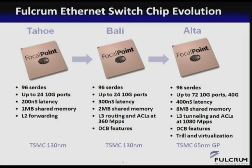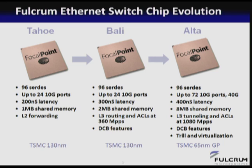I'll start with a bit of background on Fulcrum's Ethernet switch product line. It dates back to 2005/2006 when we started with the Tahoe device in TSMC 0.13 micron. The key innovations of that first-generation chip were integration — it had 24 ports of 10 gig, the first Ethernet switch at that level — and latency was a key innovation. No one really believed it was possible to do an Ethernet switch with such low latency — it was in the 200 nanosecond realm. Frame processing in Tahoe was actually pretty simple: it was a Layer 2-only switch.